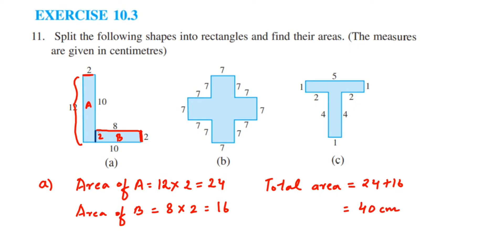Total area equals 24 plus 16, which is 40. So the answer is 40 cm². This is the answer for the first question. Now let us go to the second one.